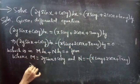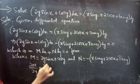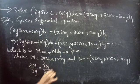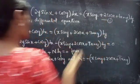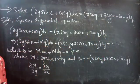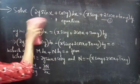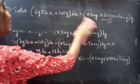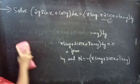If the partial derivative of M with respect to y equals the partial derivative of N with respect to x, then we can say that the given differential equation is an exact equation. So we need to find ∂M/∂y and ∂N/∂x.